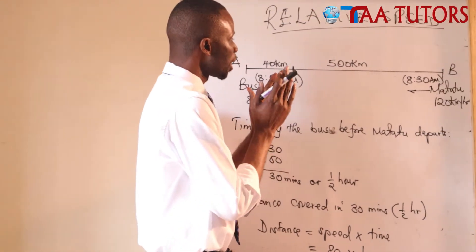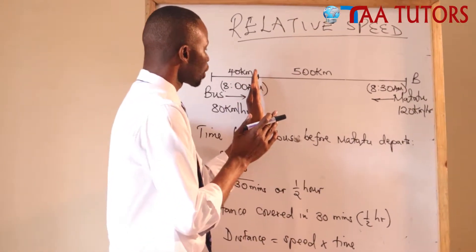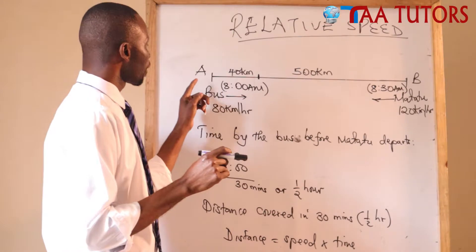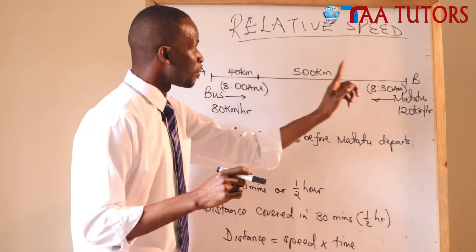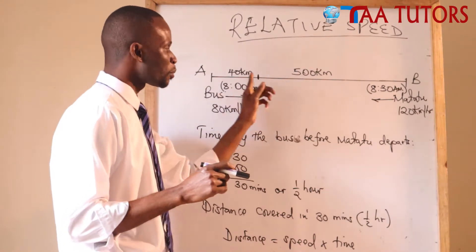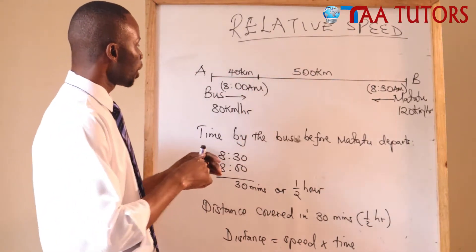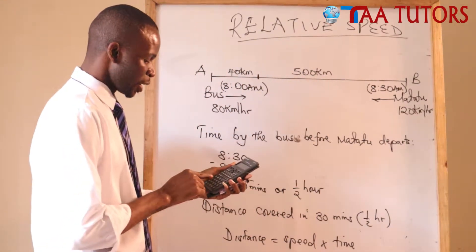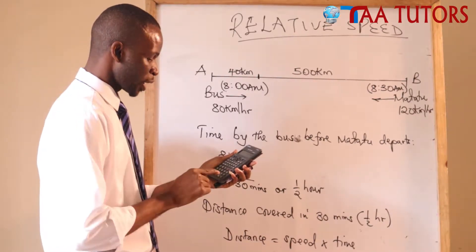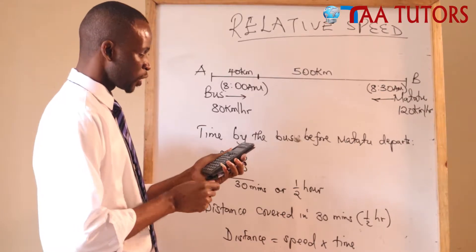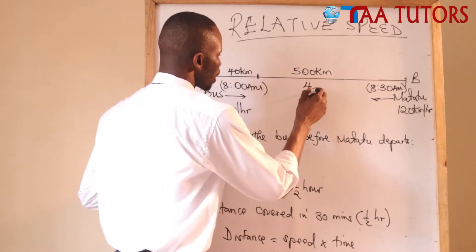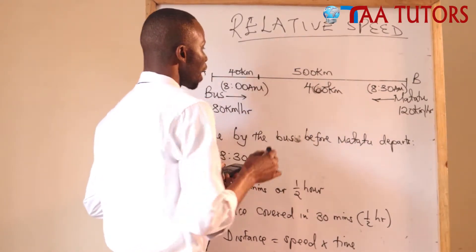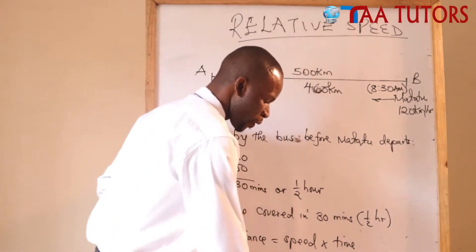When the matatu starts at 8:30, the bus has covered 40 kilometres. What is the relative distance? The relative distance is the distance between the two moving objects at the moment both are moving. Since the matatu was not moving during those 40 kilometres, that portion doesn't count. So the relative distance is 500 minus 40 = 460 kilometres.